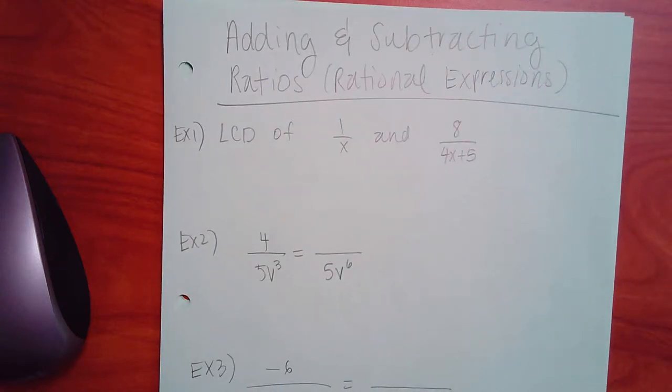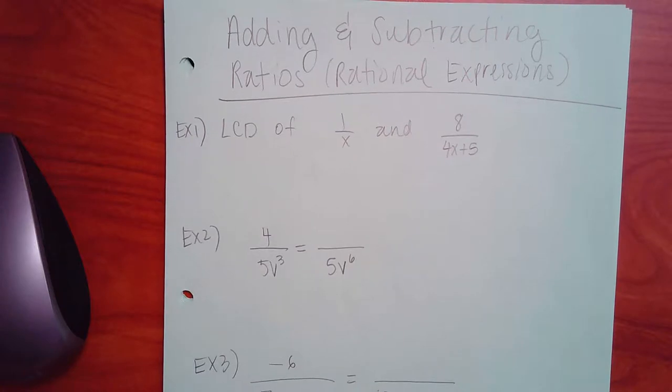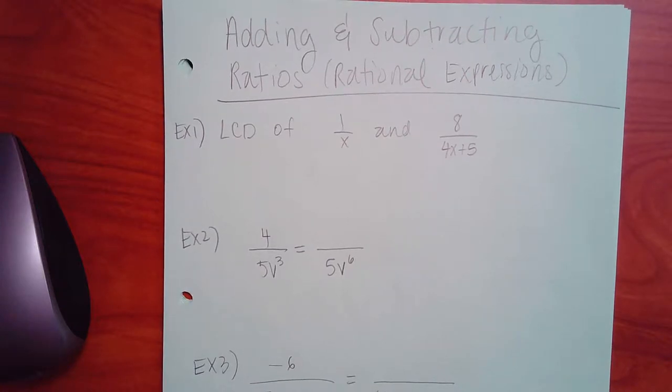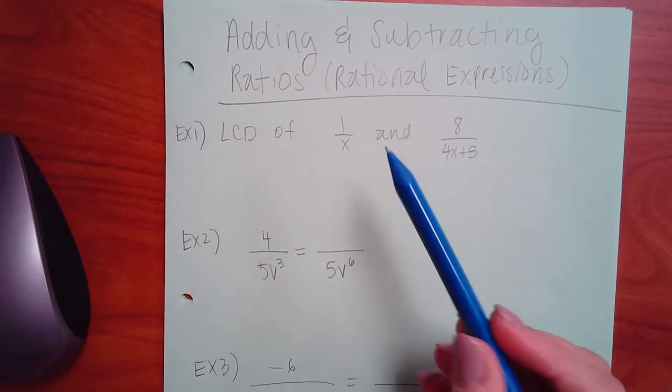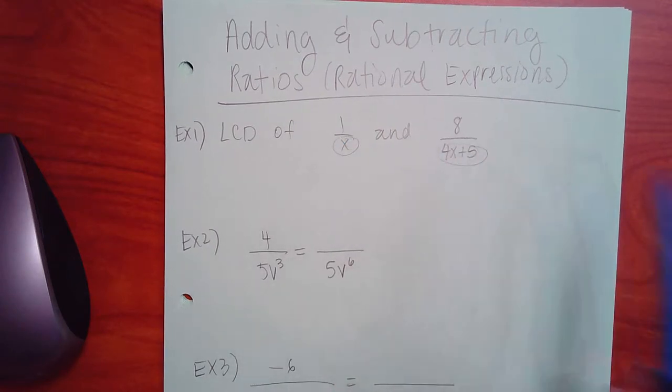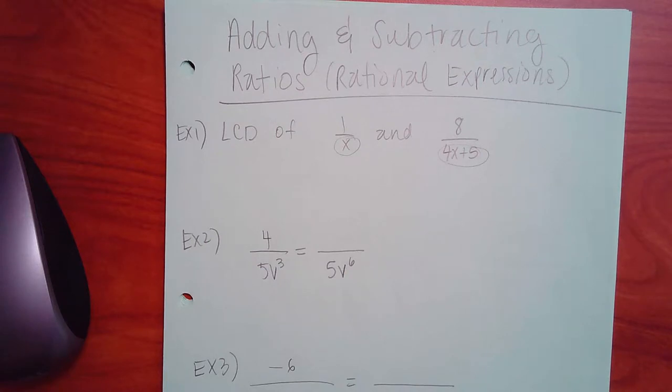The first part is still continuing from the same idea that we were doing yesterday, the lowest common denominator. So I look at these two denominators and are they completely different from one another, or can I factor one and it'll have something that's in common with the other one?